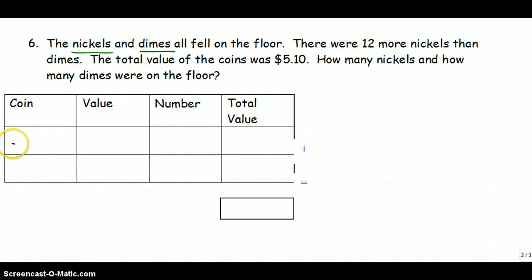So we're going to look at what they give us. They tell us that we're talking about nickels and dimes, and we already know the value of both of those: .05 for nickels, .10 for dimes. And I know that the total amount of money is $5.10, so when I add the total value of my nickels plus the total value of my dimes, it's going to equal $5.10.